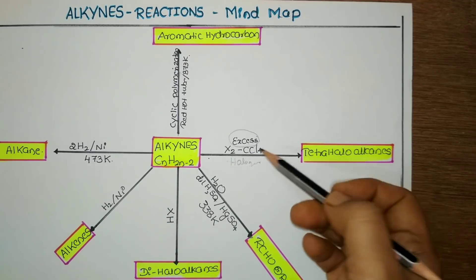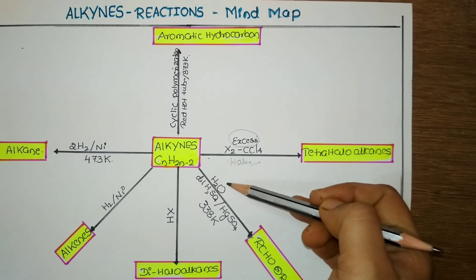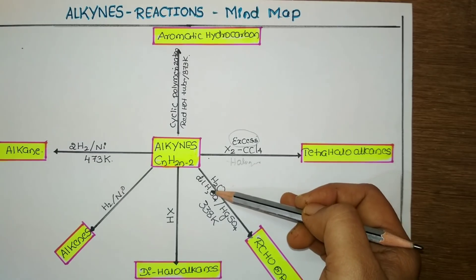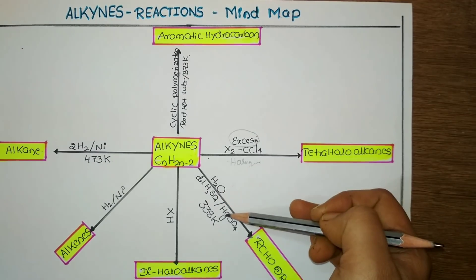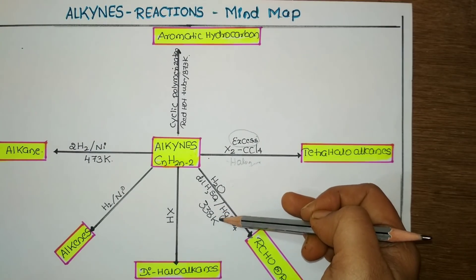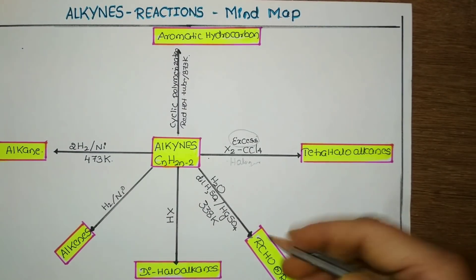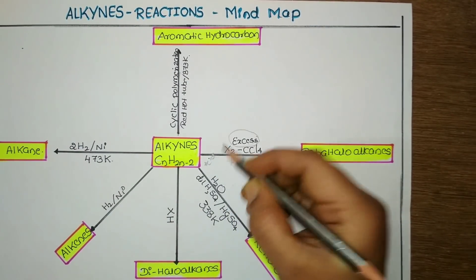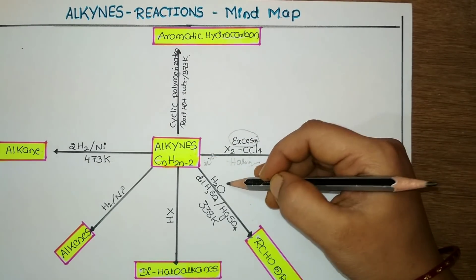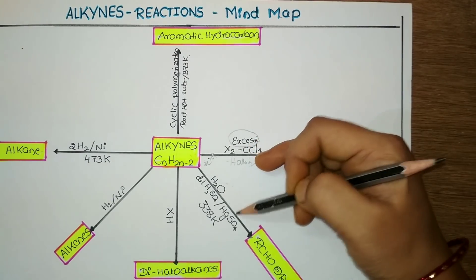Next, when alkynes are treated with water, hydrolysis of alkynes in presence of either dilute H2SO4 or mercuric sulfate at a temperature around 338 Kelvin gives either aldehyde or ketone. Most of the questions will appear based on this method. Alkynes when treated with water, that is hydrolysis of alkynes in presence of dilute H2SO4 and mercury sulfate, gives respective aldehyde or ketone. Very important method.